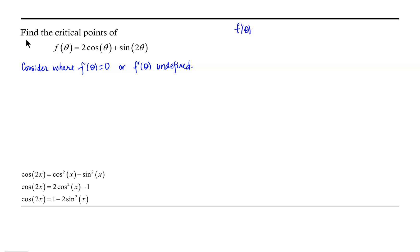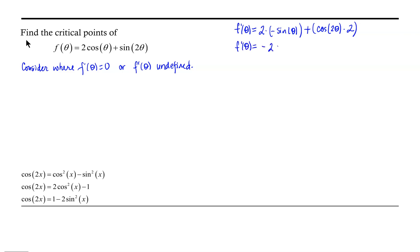f prime of theta equals — the derivative of our first term will be 2 times the derivative of cosine, which is negative sine of theta, plus the derivative of sine of 2 theta, which is cosine of 2 theta. We have to apply the chain rule because the argument is not simply theta, so the derivative of 2 theta with respect to theta is 2. The derivative of our function is negative 2 sine of theta plus 2 cosine of 2 theta.